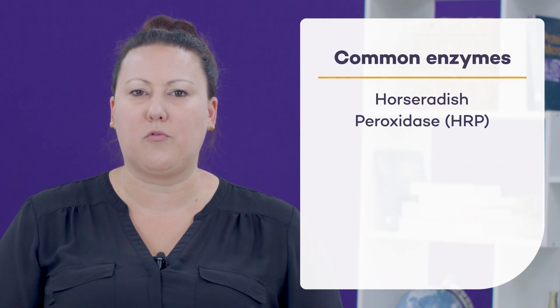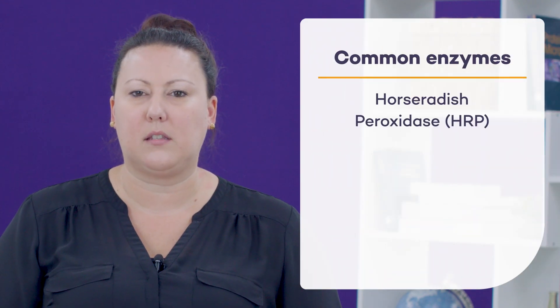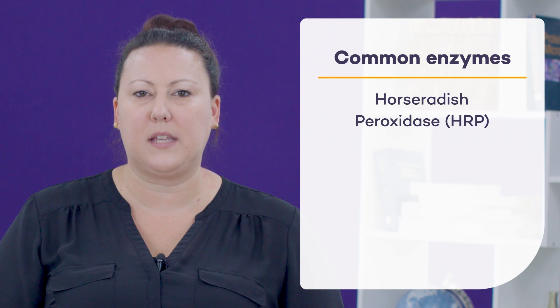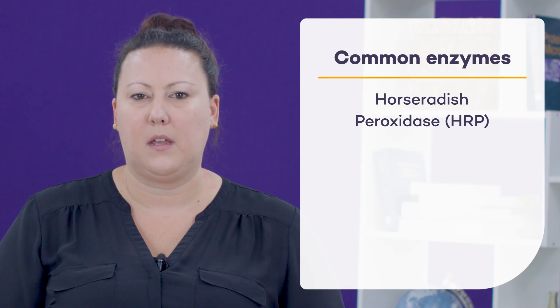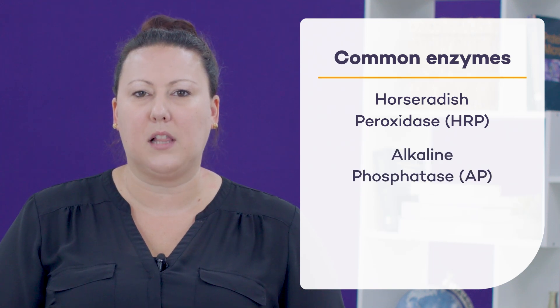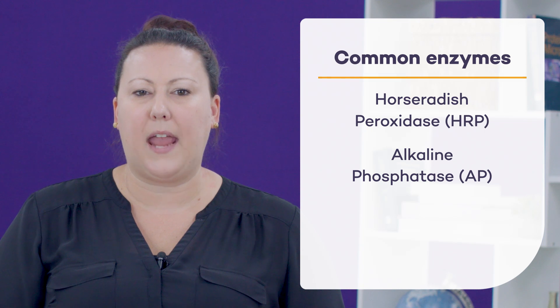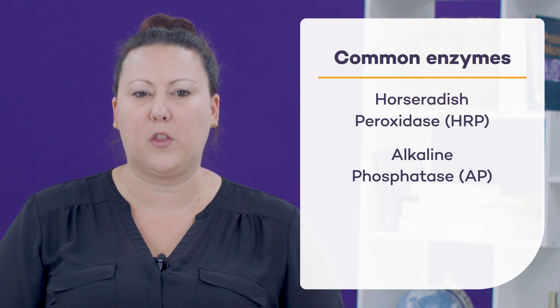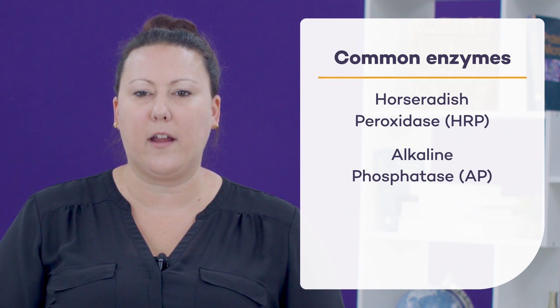The most common enzyme used is horseradish peroxidase, also known as HRP. Another enzyme used is alkaline phosphatase, known as AP. Both HRP and AP are suitable for the western blot assay and require substrate in order to be visualized on the membrane.